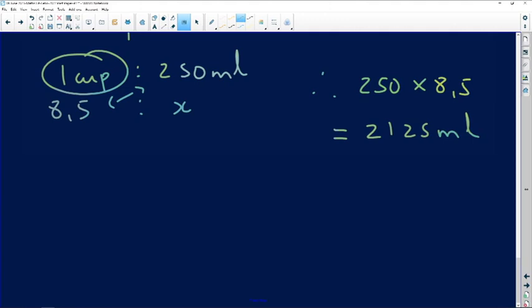So we know 1,000 milliliters in 1 liter, so we divide this 1, 2, 3 times, so it's 2.125 liters. And that is how we find our answer in terms of that.